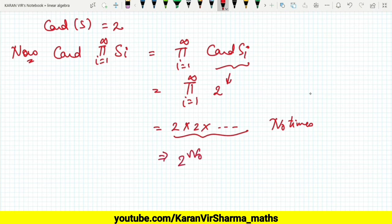So we get 2 raised to power aleph-naught. And now we have studied that 2 raised to power aleph-naught is nothing but continuum. With this, what does this imply? This implies this is uncountable. This is an uncountable set.